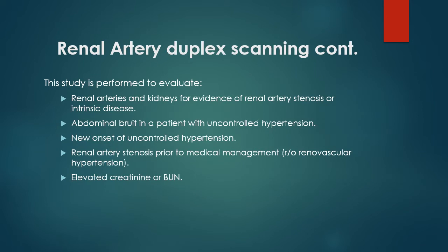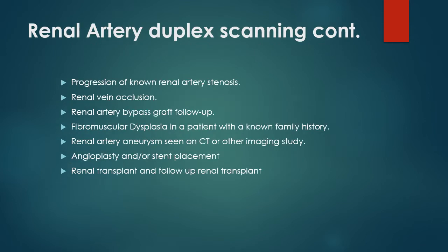Why is renal artery duplex performed? The study is performed to evaluate renal arteries and kidneys for evidence of renal artery stenosis or intrinsic disease, abdominal bruit in a patient with uncontrolled hypertension, new onset of uncontrolled hypertension, renal artery stenosis prior to medical management, rule-out renal vascular hypertension, and also elevated creatinine or BUN. These are some of the indications for performing a renal artery duplex.